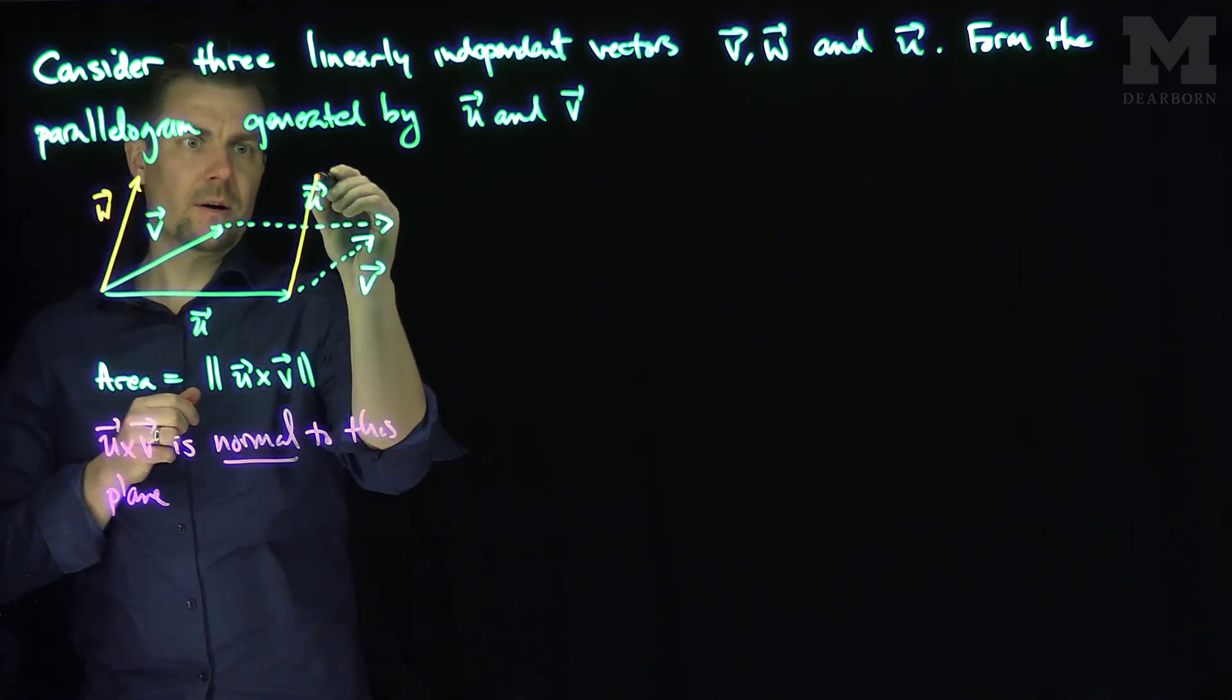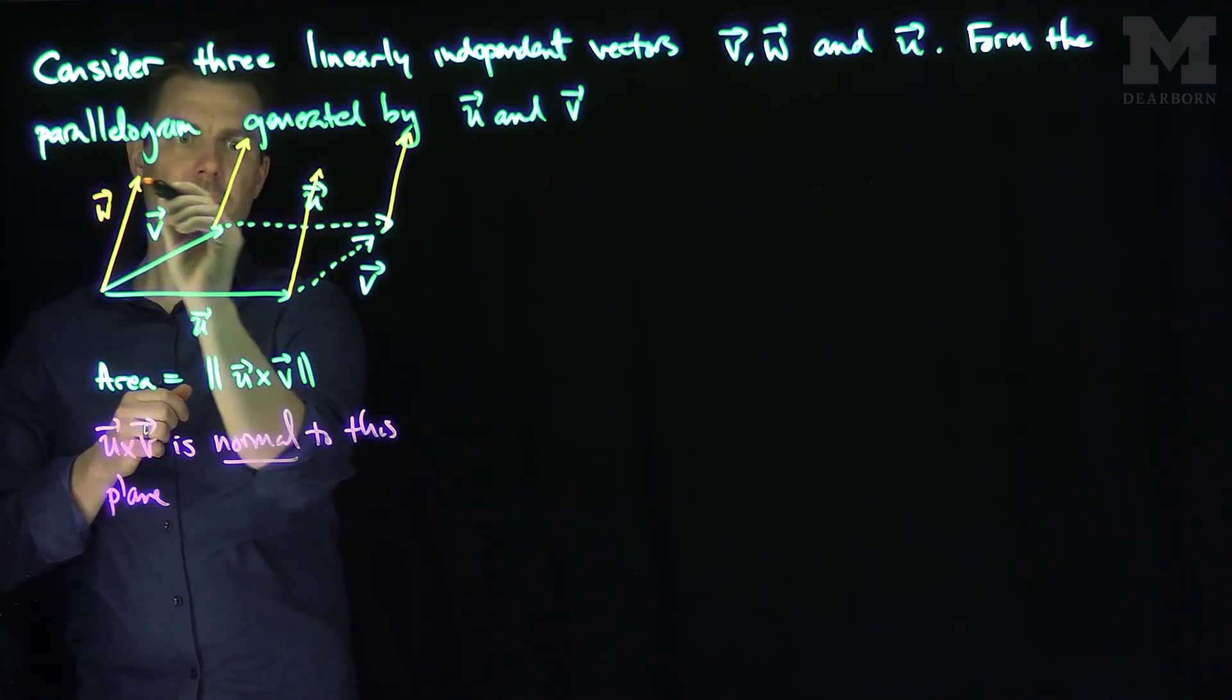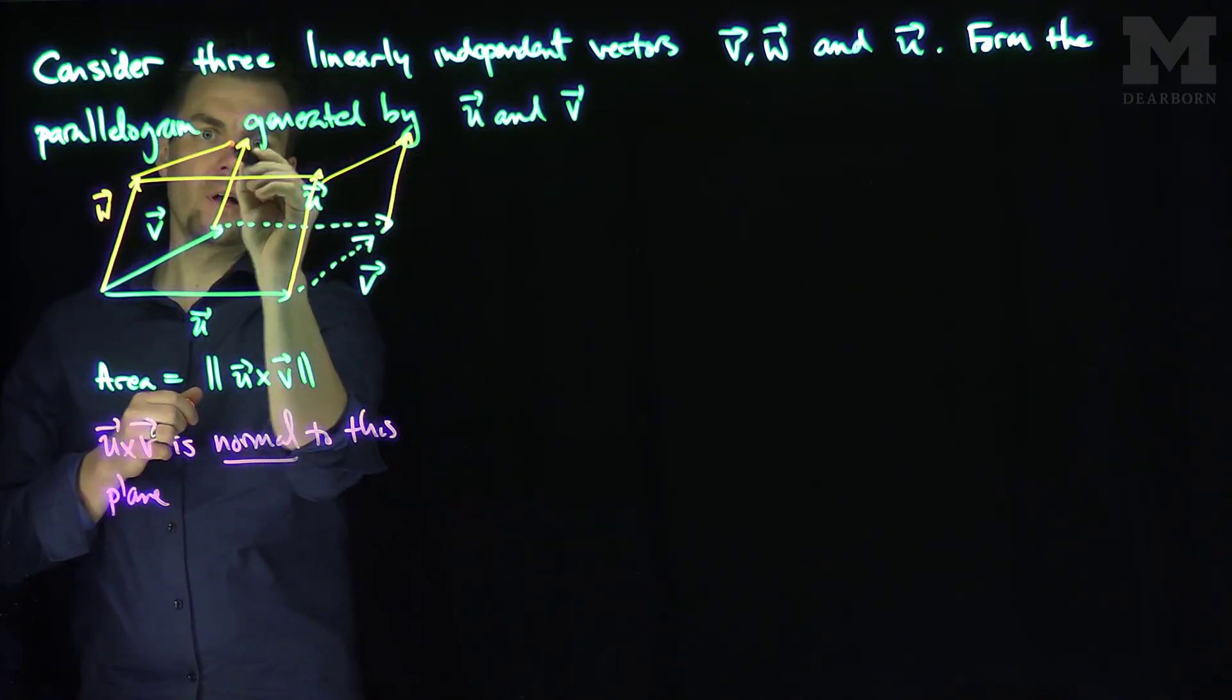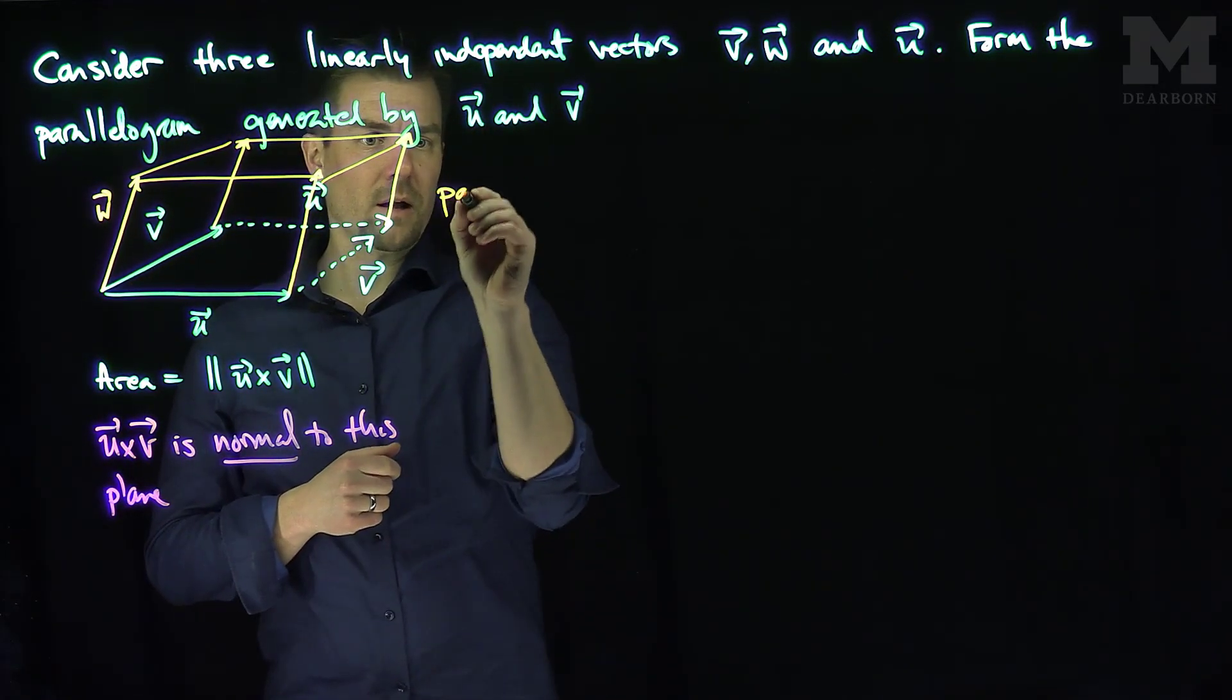Draw a parallel copy of w over here, a parallel copy of w over here, and a parallel copy of w over here. And then I can draw the same parallelogram as below, right above it, and I form this box shape. This is called a parallelepiped.